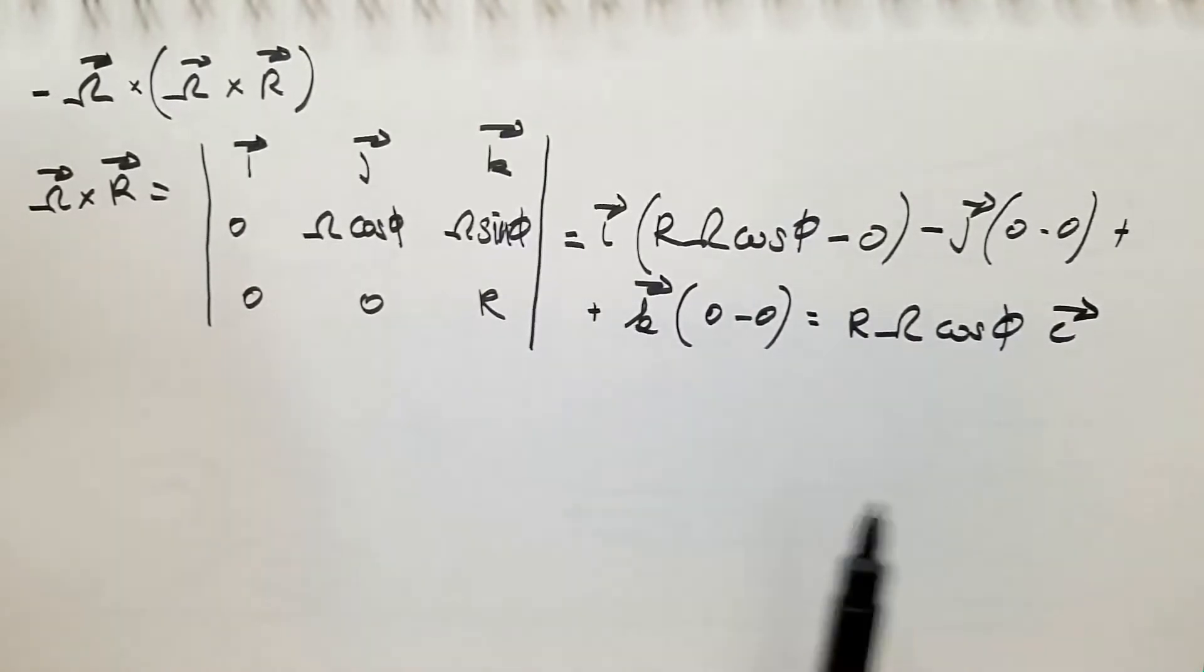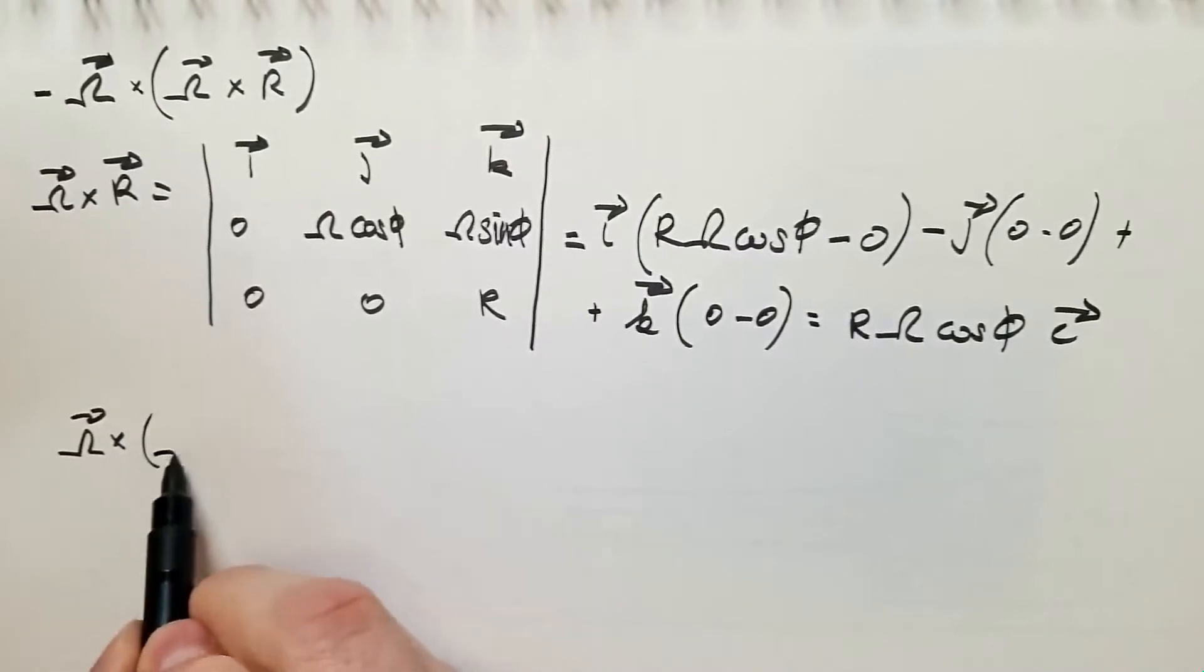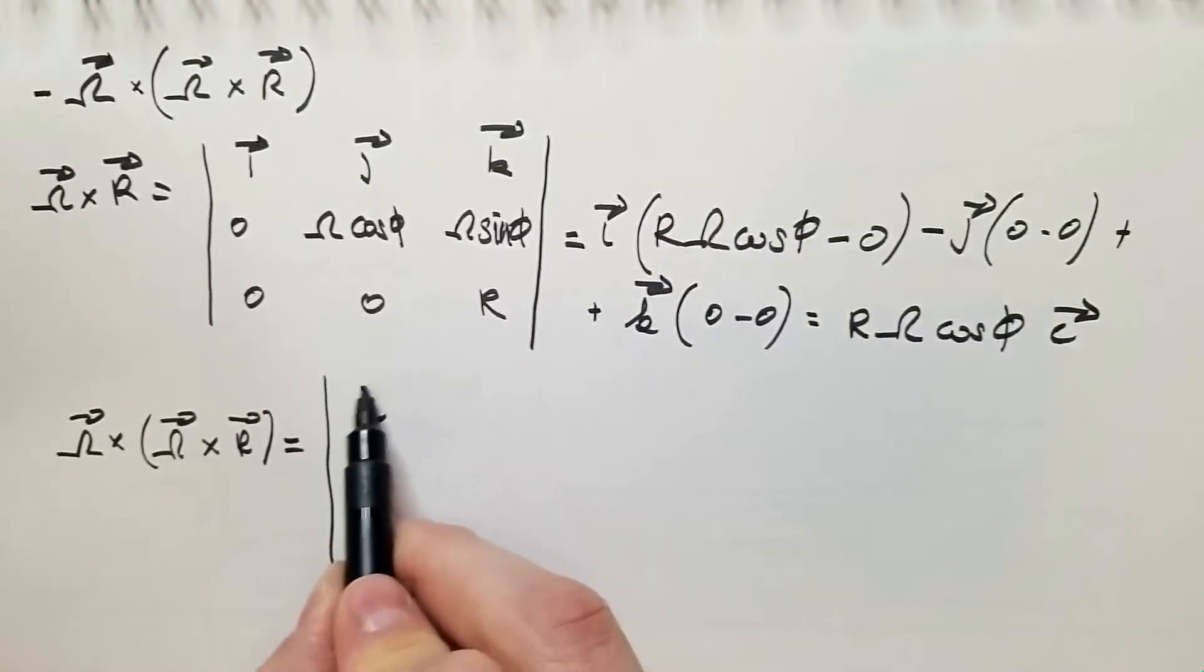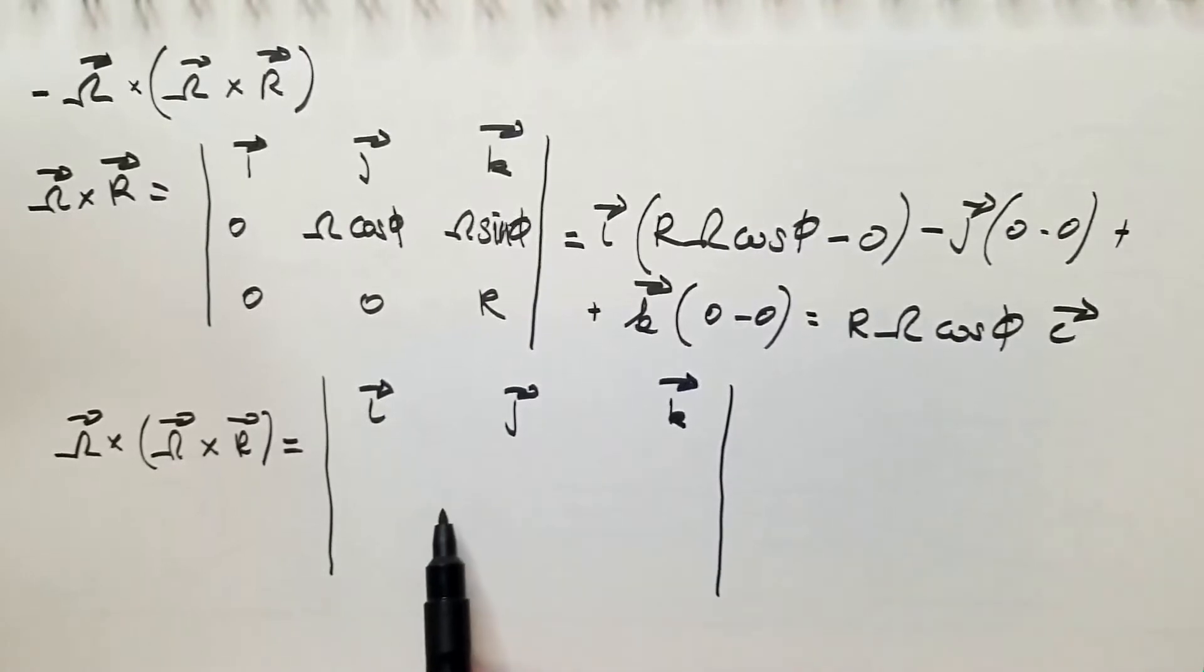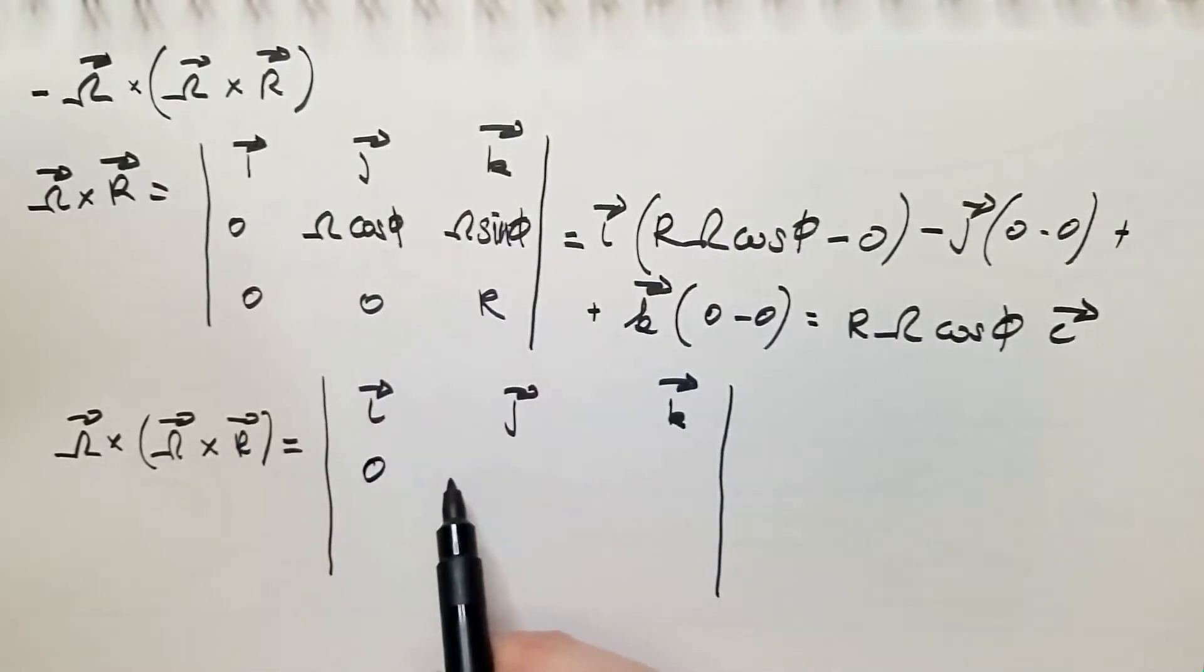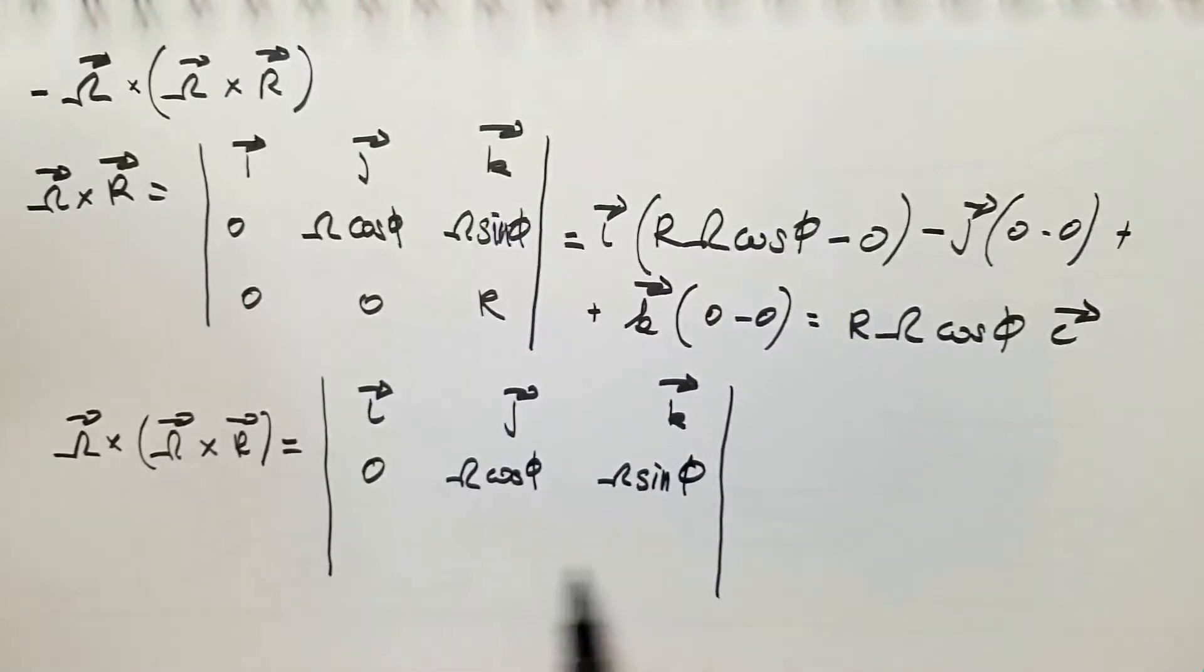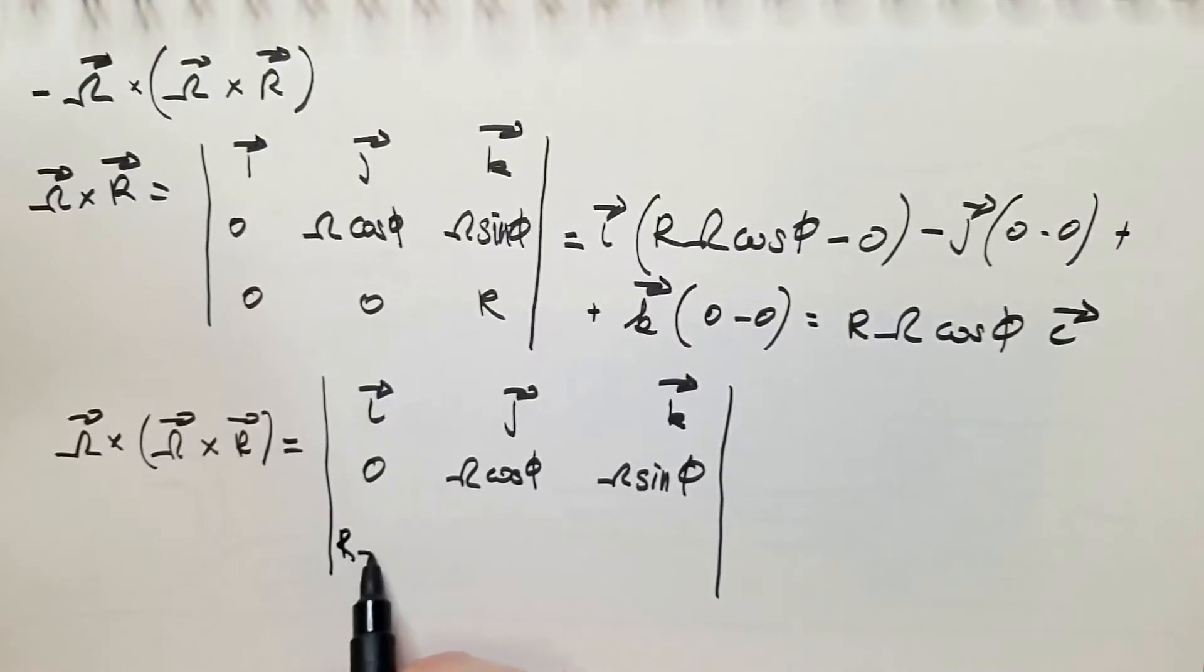But this is not the end of the road, because now I need to use this result to calculate omega cross this. So, omega cross omega cross R then becomes, again, first row is I, J, K. The second row is omega components, which are the same, zero, omega cosine phi, omega sine phi. And the third row is now components of omega cross R, which I just calculated here, and it has only component along the I direction, which is R omega cosine phi, and the other two components are zero.